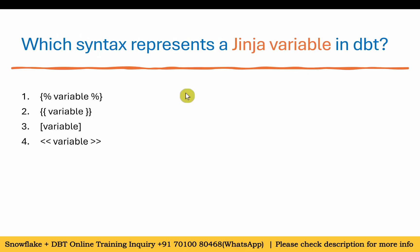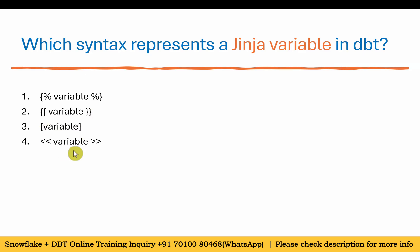Which syntax represents a Jinja variable in DBT? The options shown include different variable notations. One option with the percentage sign is used for macros — we've seen that. The answer is two: the double curly brace variable notation `{{ variable }}`.